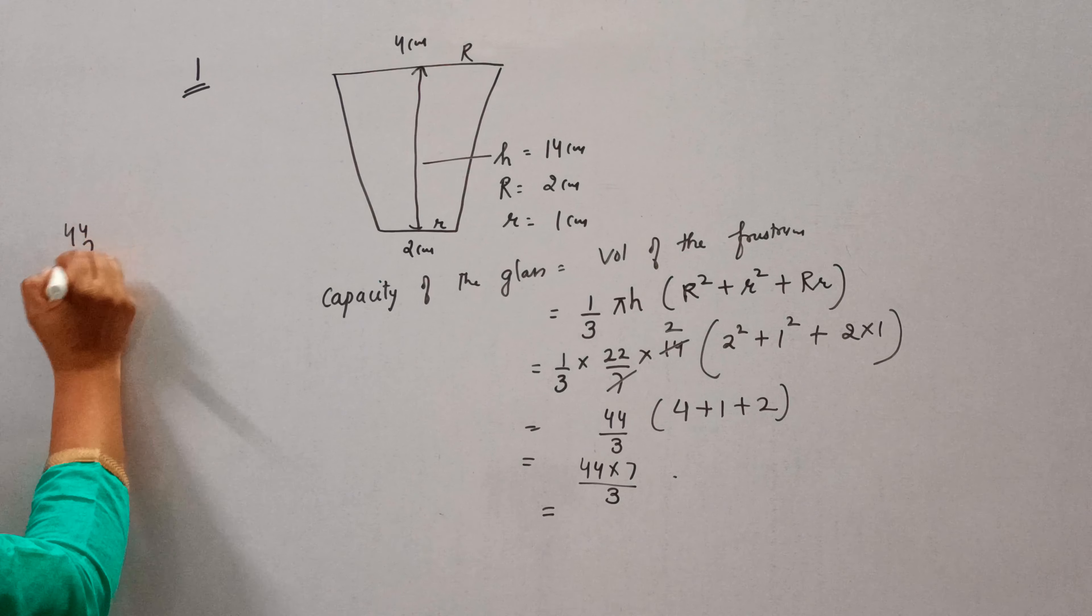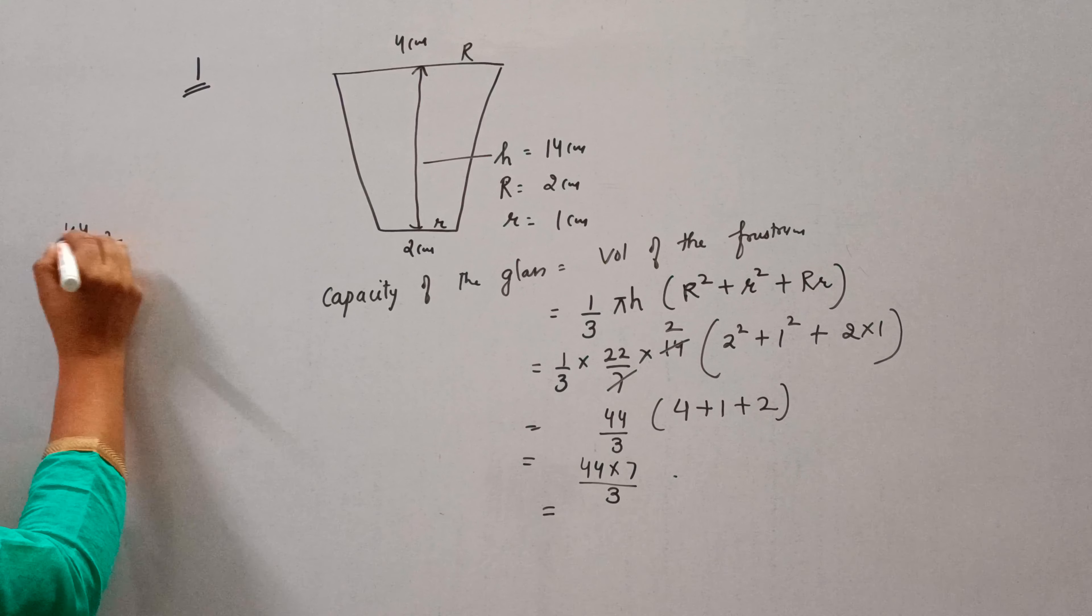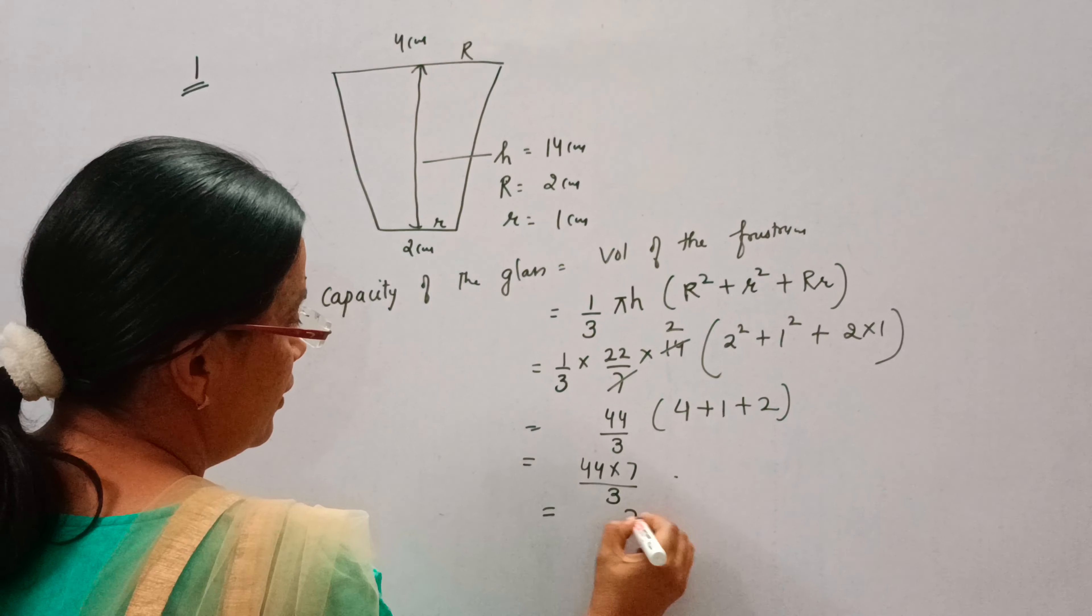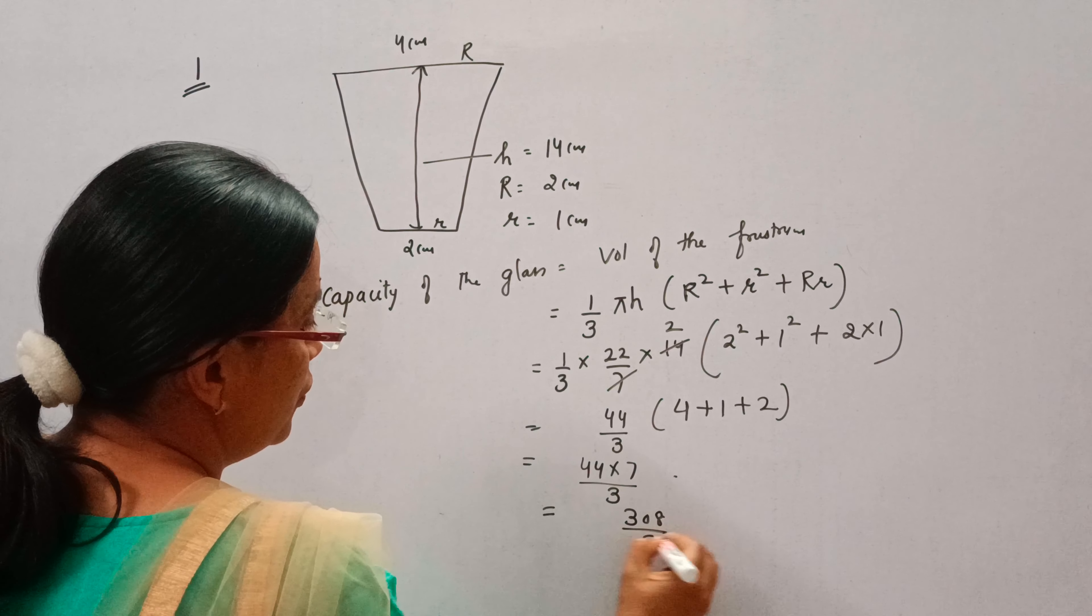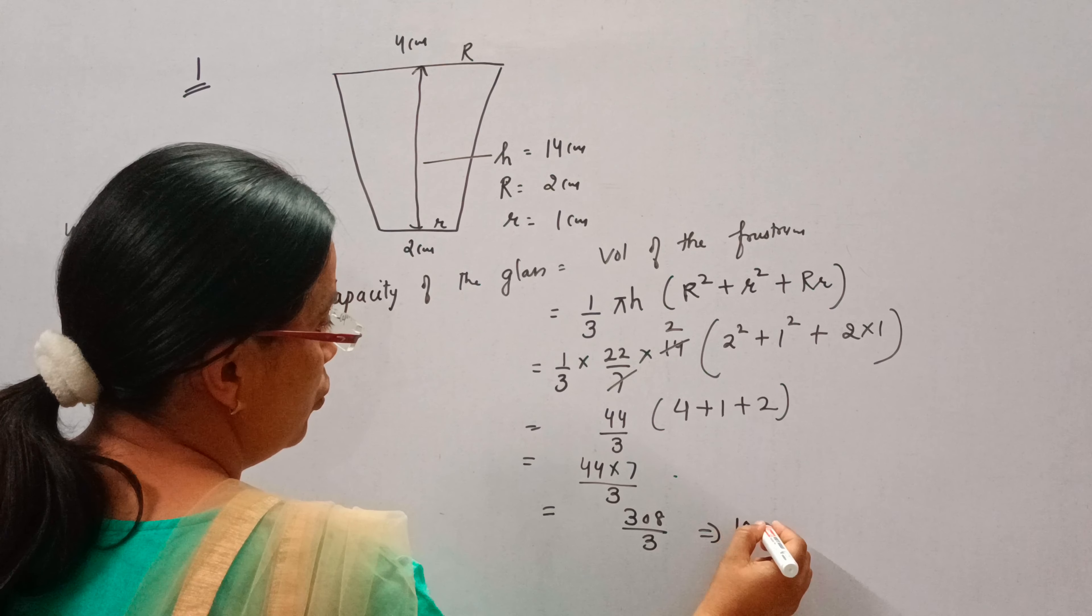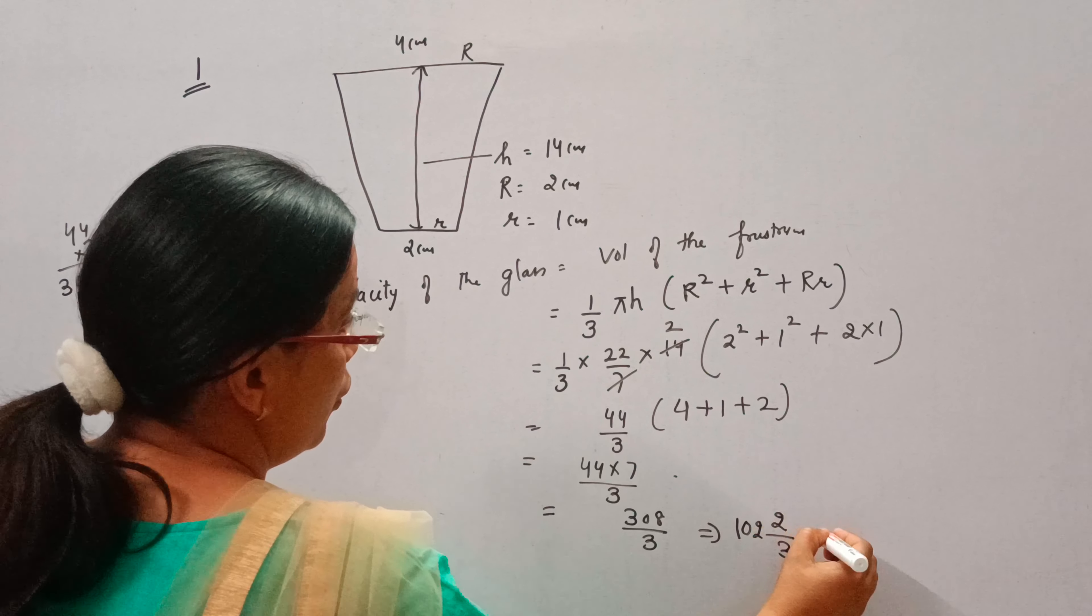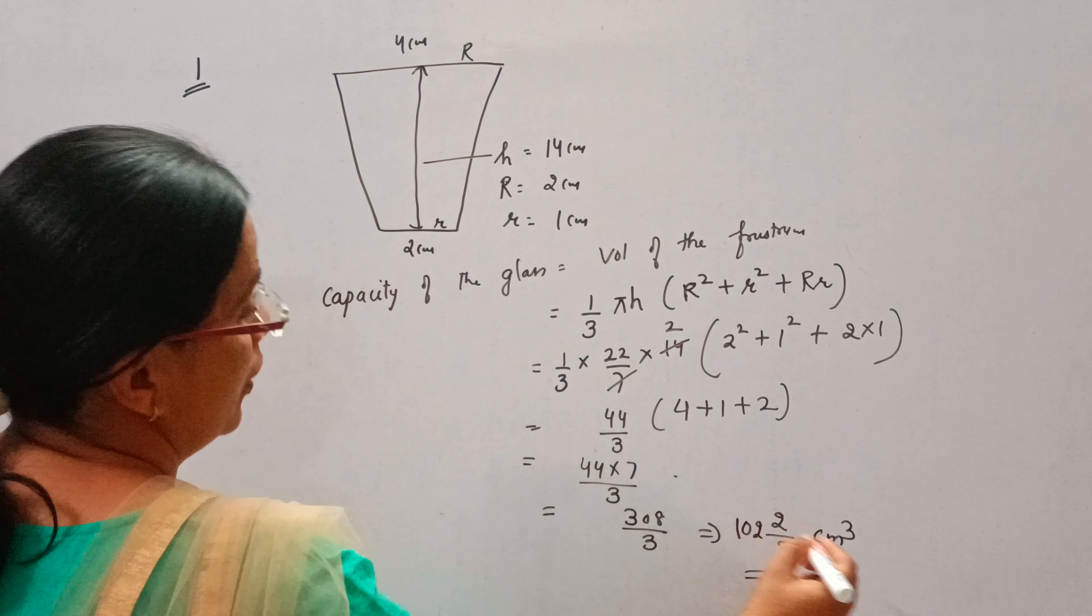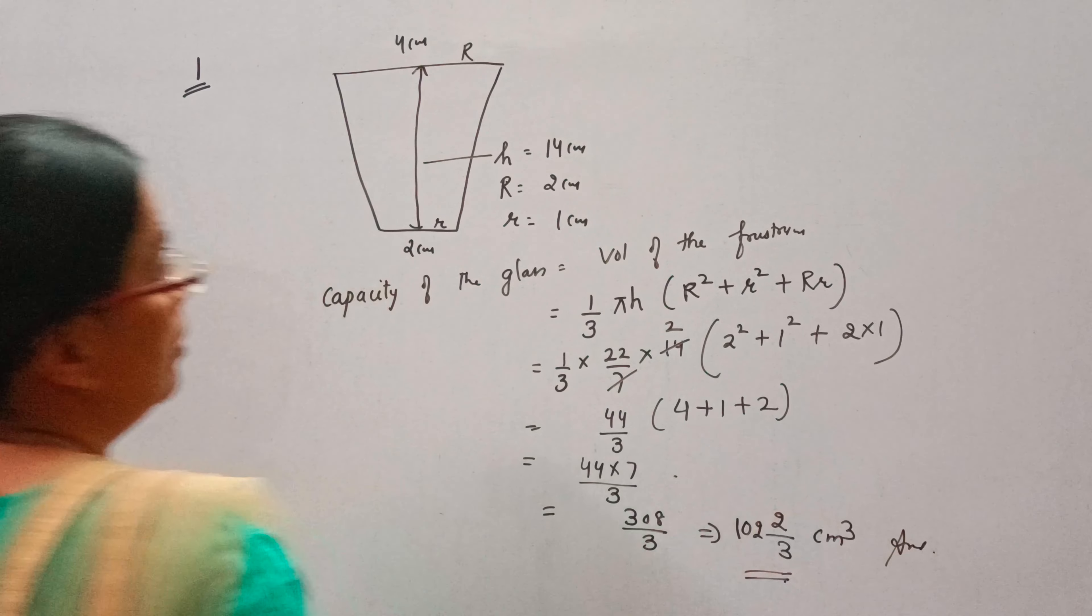So, 44 into 7: 308 upon 3. So it will be 102.66, approximately 102 and 2/3 cm cube. This is the capacity of the glass.